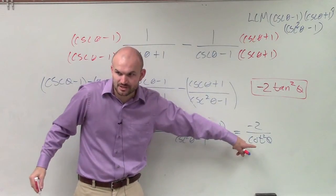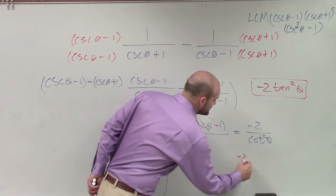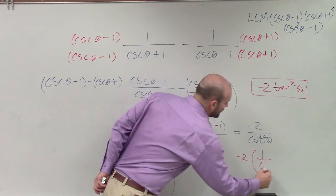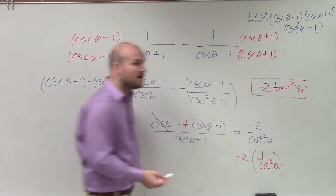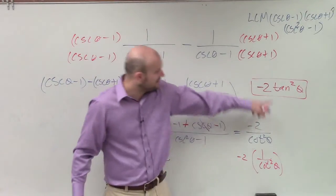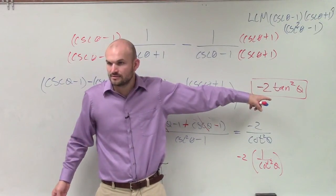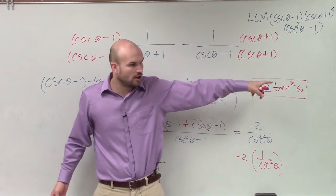1 over cotangent squared of theta is the same thing as tangent squared. Do you guys agree with that? It's just all in those identities.